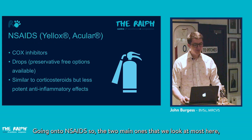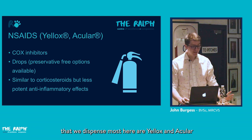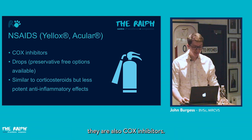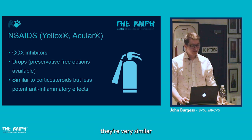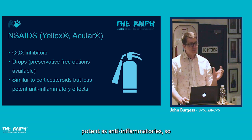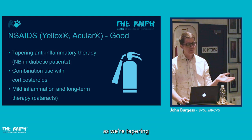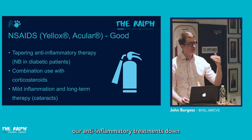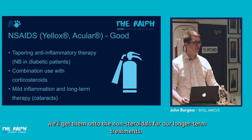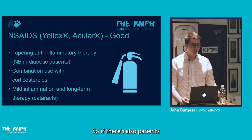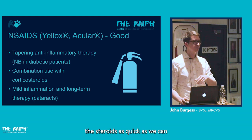The two main NSAIDs we use are Yellox (bromfenac) and Acular (ketorolac), both COX inhibitors. They are often slightly less potent than corticosteroids as anti-inflammatories, and we frequently use them when tapering anti-inflammatory treatments — transitioning patients off steroids onto NSAIDs for longer-term management.